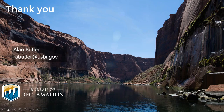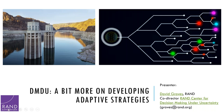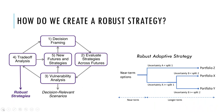Let me wrap up with a couple minutes on the last steps of an RDM study — developing that robust strategy. The Basin Study looked at a couple of different portfolios, and the implementation of those portfolios was informed by the vulnerability analysis. A robust strategy often consists of a set of low-regret near-term actions and signposts that tell us when we might need to implement additional actions, plus different sets of deferred or contingent actions.